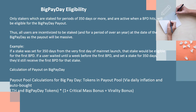Calculation of payout on Big Pay Day: the payout pool is calculated using tokens in the payout pool via daily inflation and auto-bought ETH, and Big Pay Day tokens, multiplied by (1 + critical mass bonus + virality bonus).